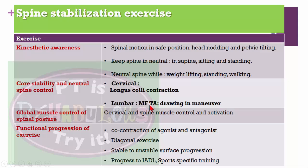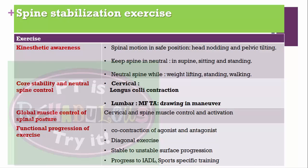For global muscle control of the spine, use cervical or lumbar spine control with muscle activation. For functional progression, perform co-contraction of agonist and antagonist muscles or use diagonal patterns. Begin with exercises on a stable surface, then gradually progress to an unstable surface, and progress to instrumental activities of daily living and sport-specific training. These are all about spinal stabilization exercises.